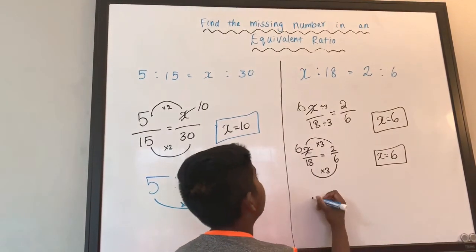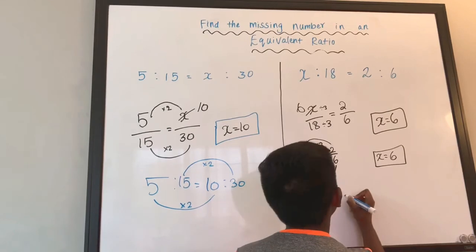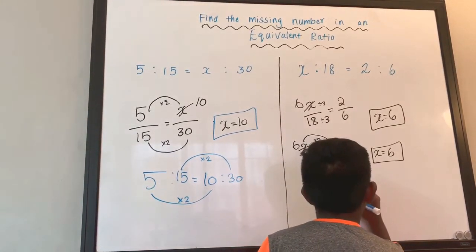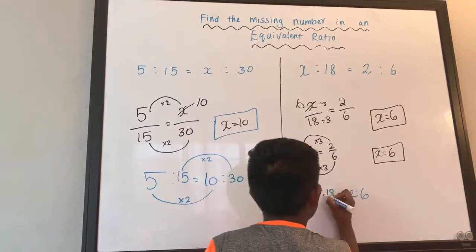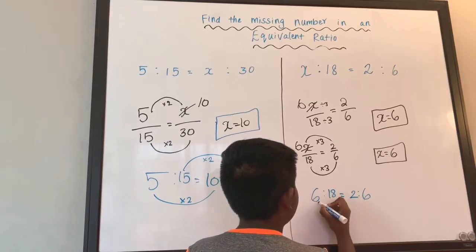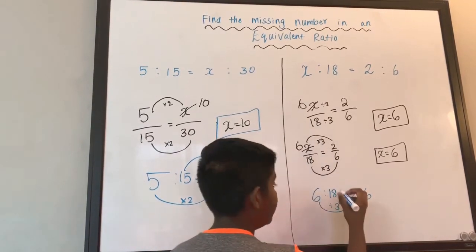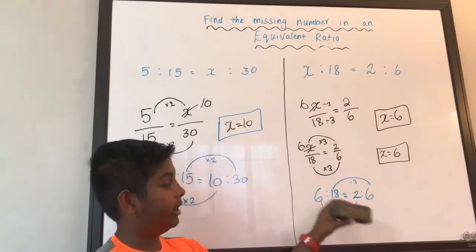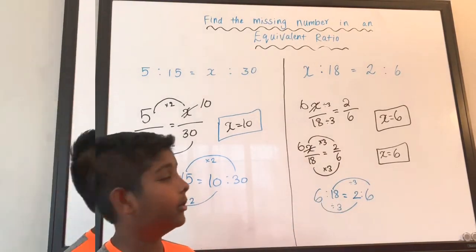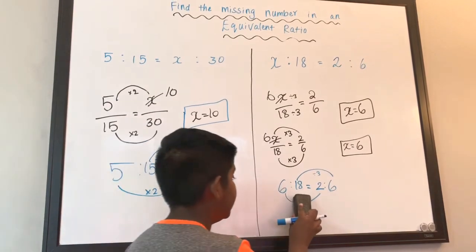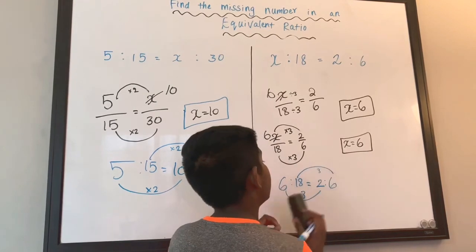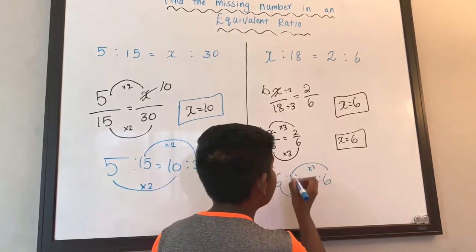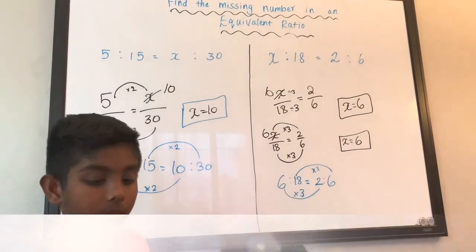Now we're gonna write like this. So X is 18 equals to 2 is to 6. So our X value is 6. So 6 divided by 3 equals to 2 and 18 divided by 3 equals 6. See, we get the same answer. These are equal ratios. We divide by 3, same here. So if we change this sign into a multiplication sign, it's gonna be 2 times 3 equals 6, and 6 times 3 equals 18. So we can just do it any way. And it's still equal ratios.